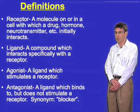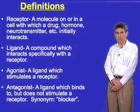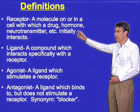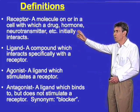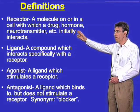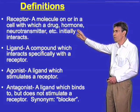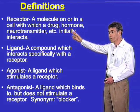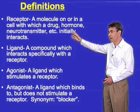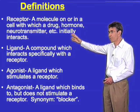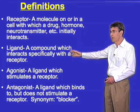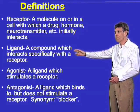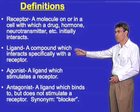Let me begin with a few definitions. A receptor is a molecule on or in a cell with which a drug or hormone or a neurotransmitter initially interacts. A ligand is a compound which interacts specifically with the receptor.